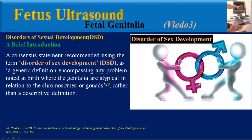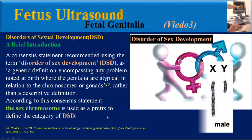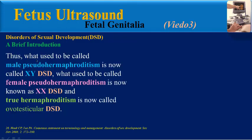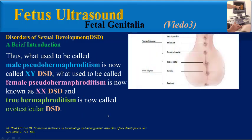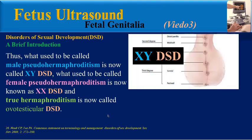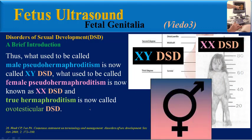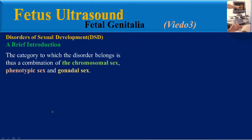The term 'disorder of sex development' encompasses any problem noted at birth where the genitalia are atypical in relation to the chromosomes or gonads. According to this consensus statement, the sex chromosome is used as a prefix to define the category. What used to be called male pseudo-hermaphroditism is now called XY DSD, female pseudo-hermaphroditism is now XX DSD, and true hermaphroditism is now called ovotesticular DSD.